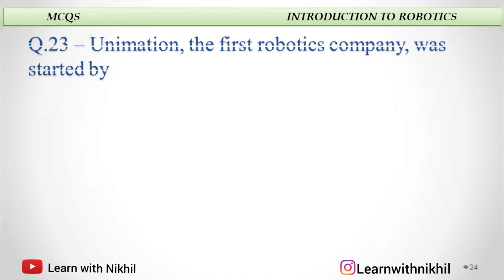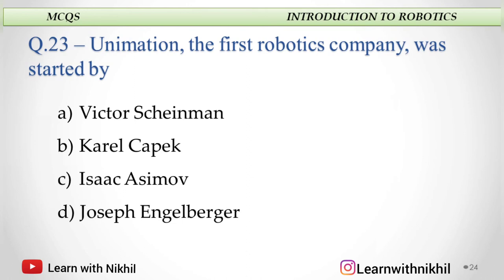Next question: Unimation, the first robotic company, was started by — A. Victor Scheinman, B. Carol Capek, C. Isaac Asimov, or D. Joseph Ejenberg. The answer is Joseph Ejenberg.